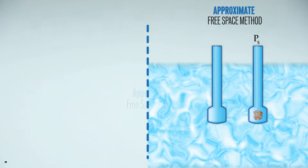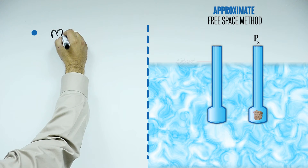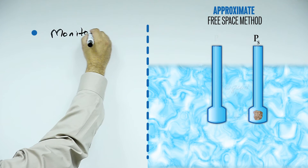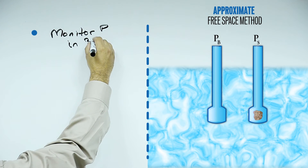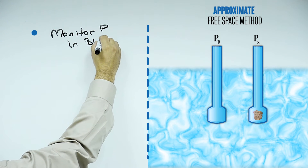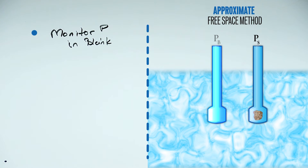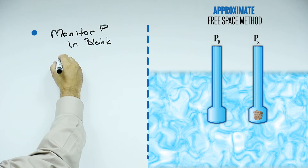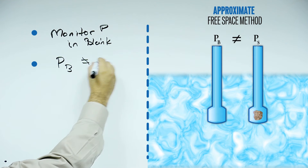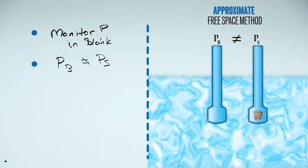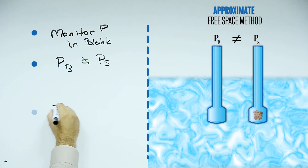In the approximate free space method, we monitor pressure in a pseudo balance tube. By monitoring the pressure in the blank tube, the pressure on the blank side is never equal to the pressure on the sample side. Because of this, we have two pressure measurements.